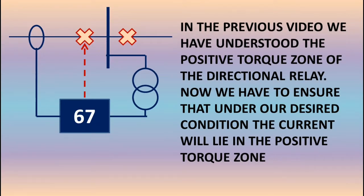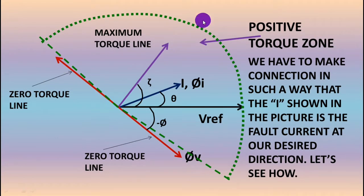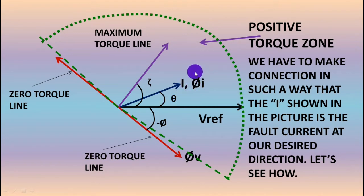In the previous video we understood the positive torque zone of the directional relay. Now we have to ensure that under our desired condition, the current will lie in the positive torque zone. This is our objective. This is the diagram in which I explained how the torque is generated and this is the positive torque zone. We have to make sure that I is the fault current at our desired direction.